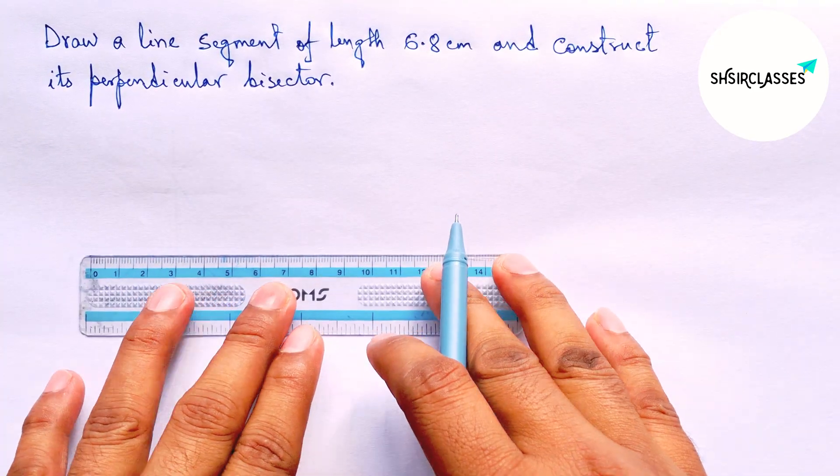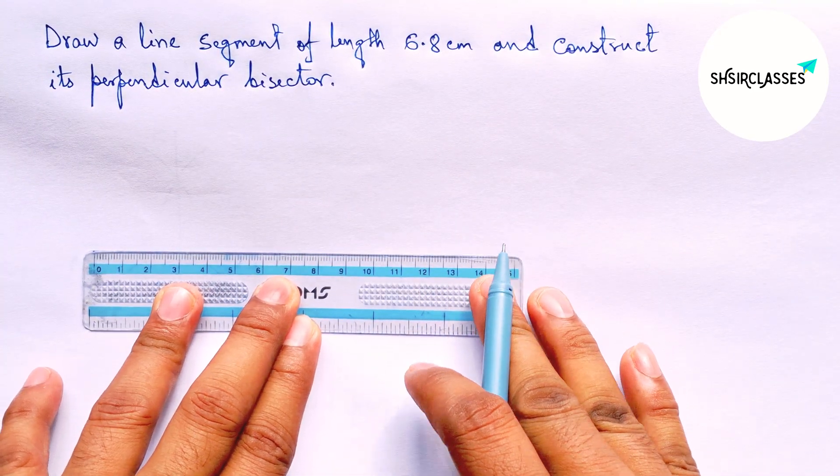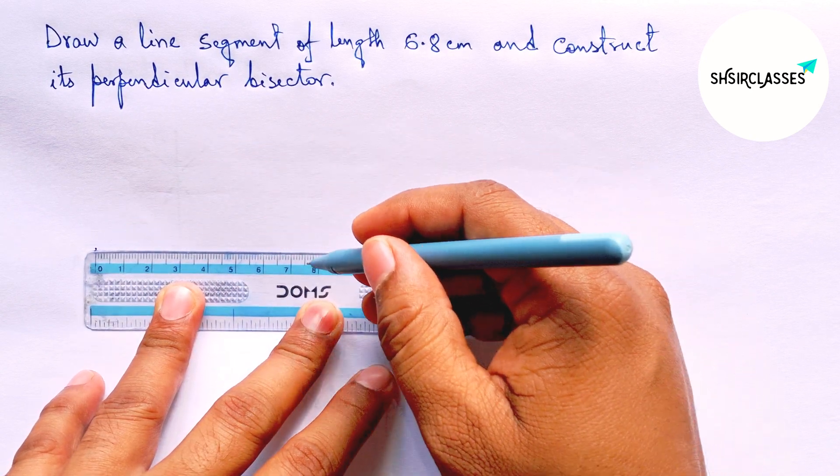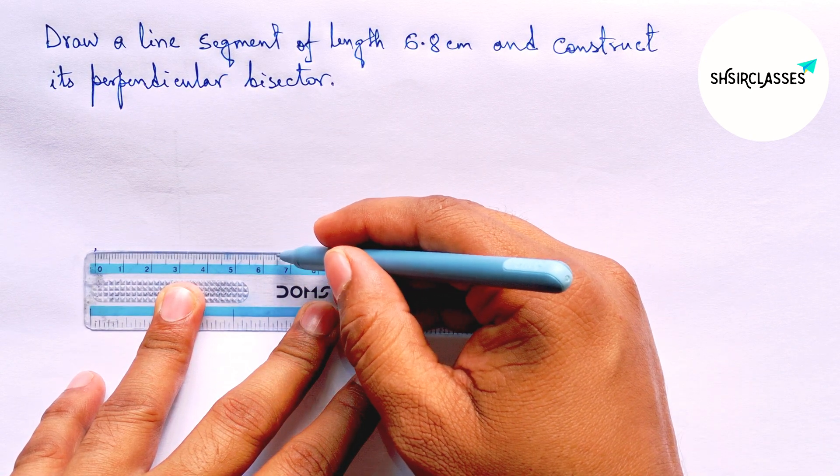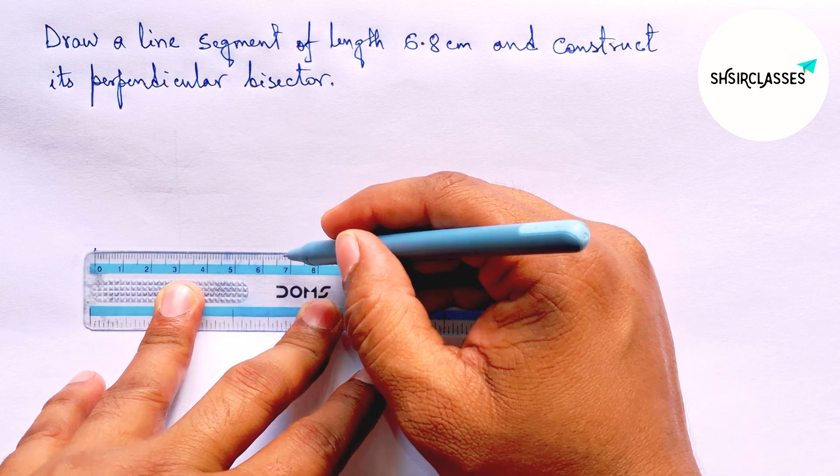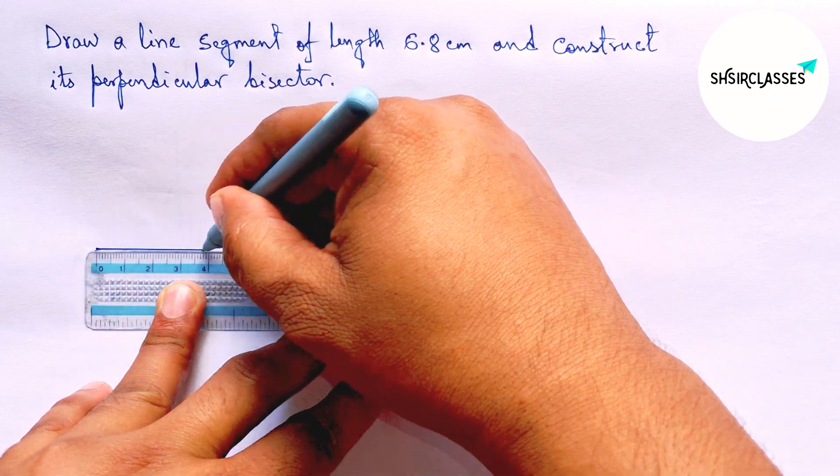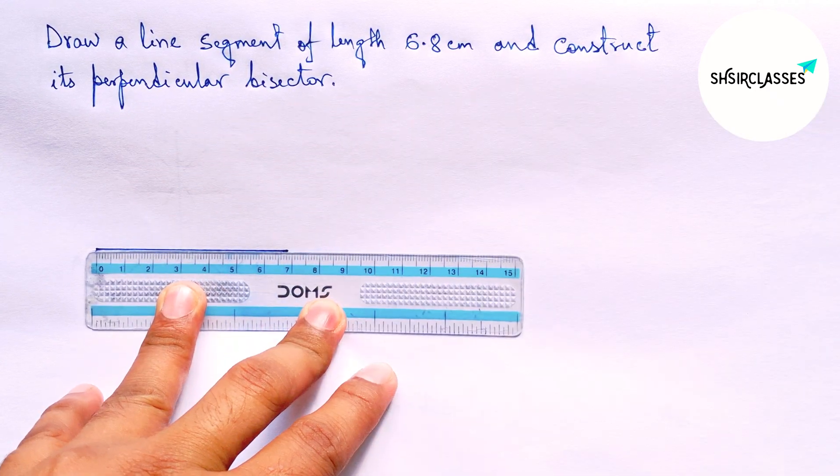First of all, let us draw here a line segment of length 6.8 cm. So here 6, and this is 6.5, and counting 3... So 6.8 cm. This is a 6.8 cm line segment.